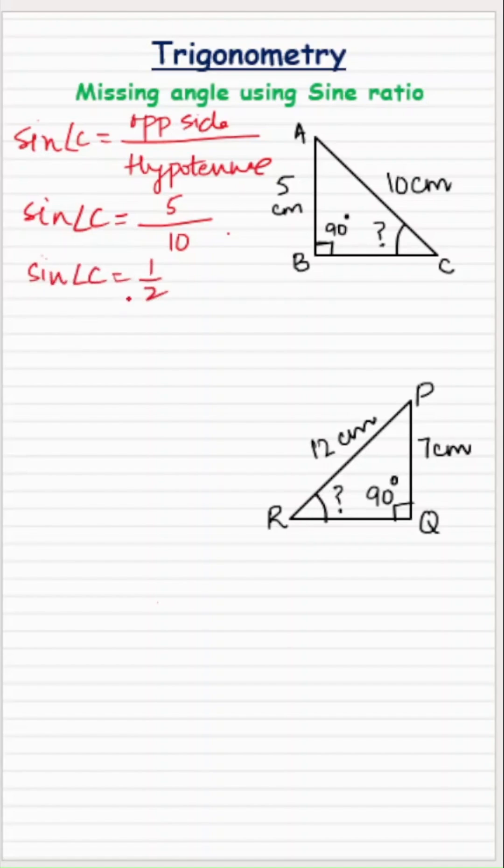So now I need to see at what angle sine takes the value of 1 half. I know that half is actually sine of 30 degrees. So sine of angle C is equal to sine 30. That means angle C value is equal to 30 degrees.